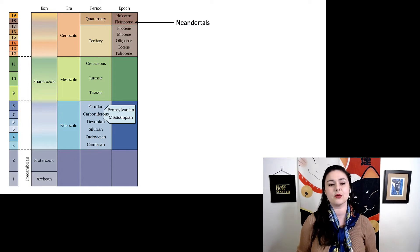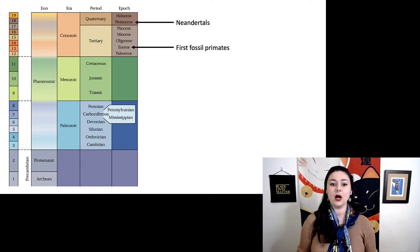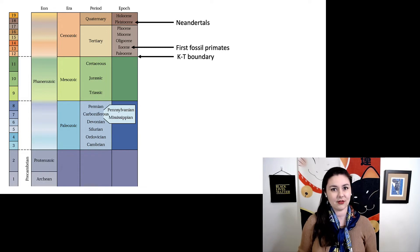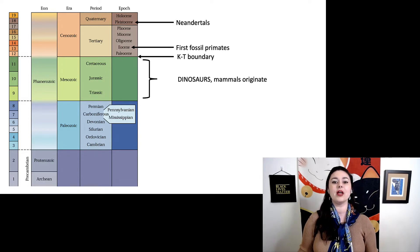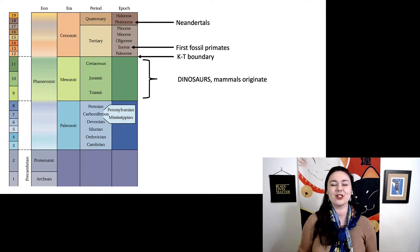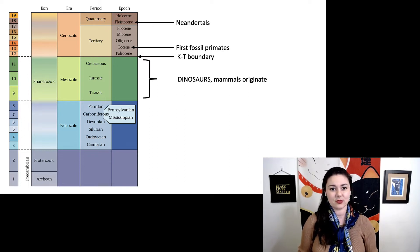Here in the Pleistocene, that's where we see a lot of Neanderthals. In the Eocene, that's where we see the very first fossil primates. The KT boundary, that's when the asteroid killed off all of the dinosaurs. And that big green part, the Mesozoic, that's where we see dinosaurs. There are, of course, different dinosaurs within these different periods, and that's actually where we see the first mammals. You probably have already heard this, but the dinosaurs you see in Jurassic Park, they were mostly dinosaurs that actually lived in the Cretaceous. They mostly used the word Jurassic because they liked how it sounded better.